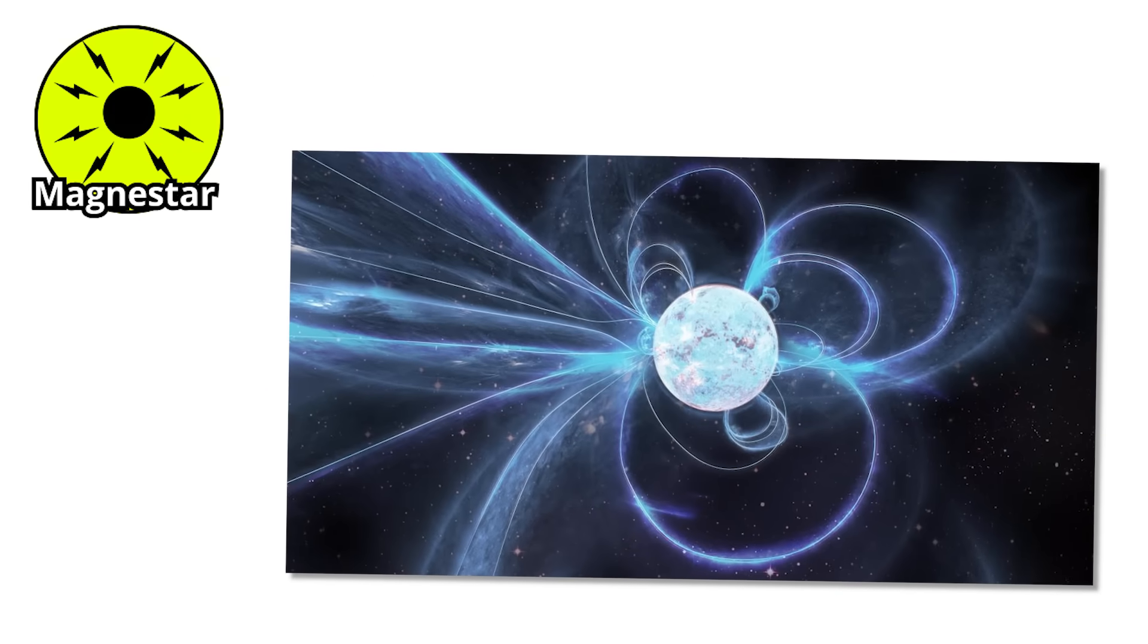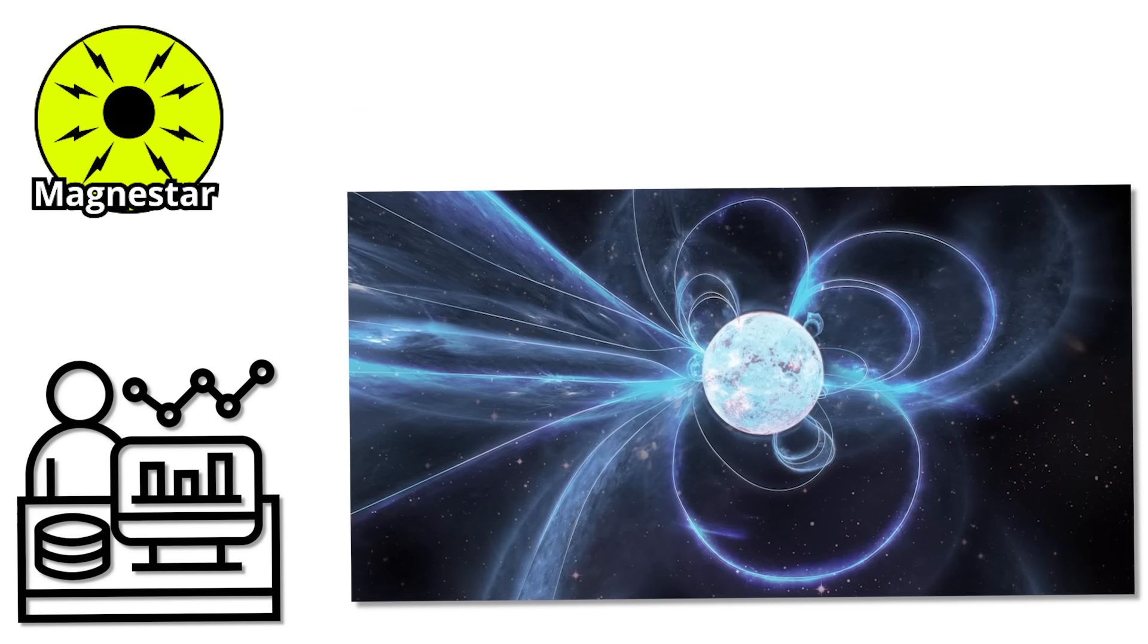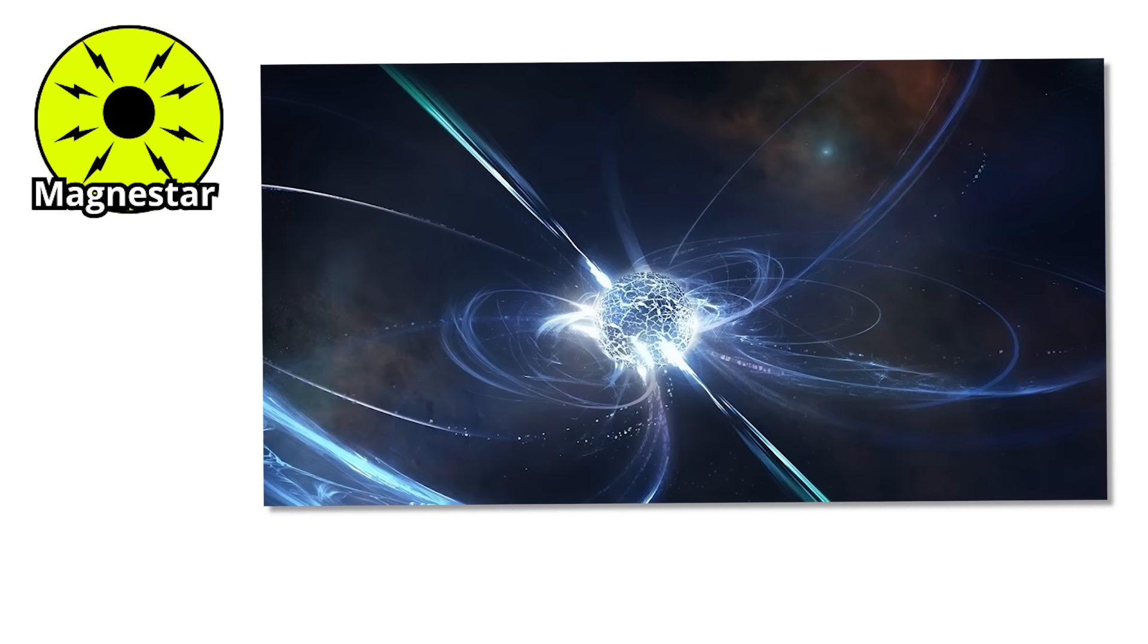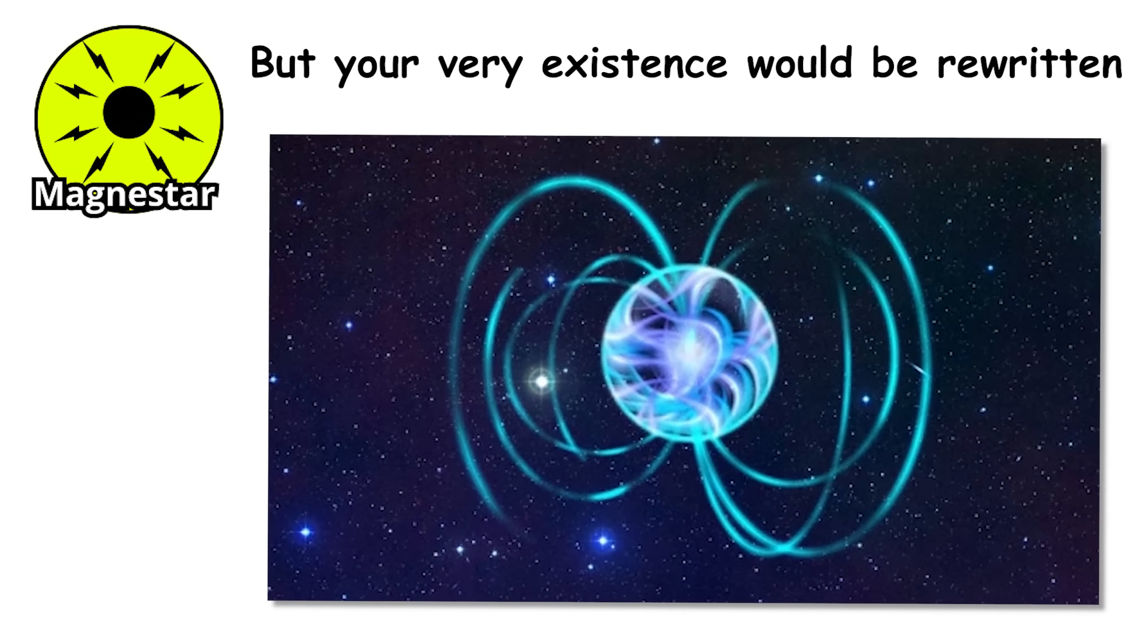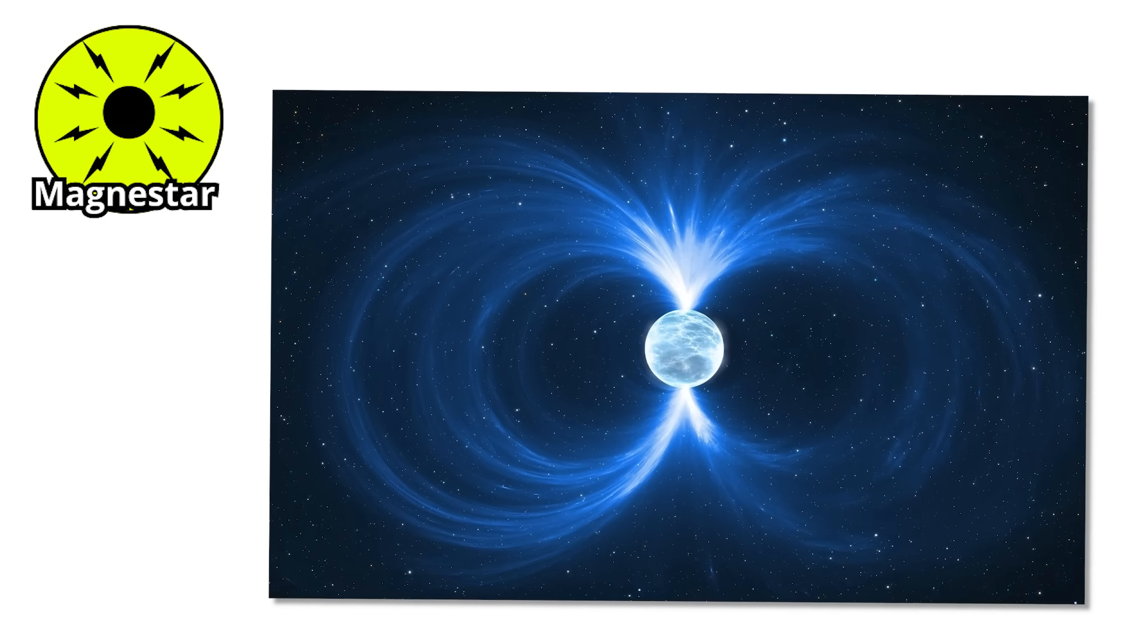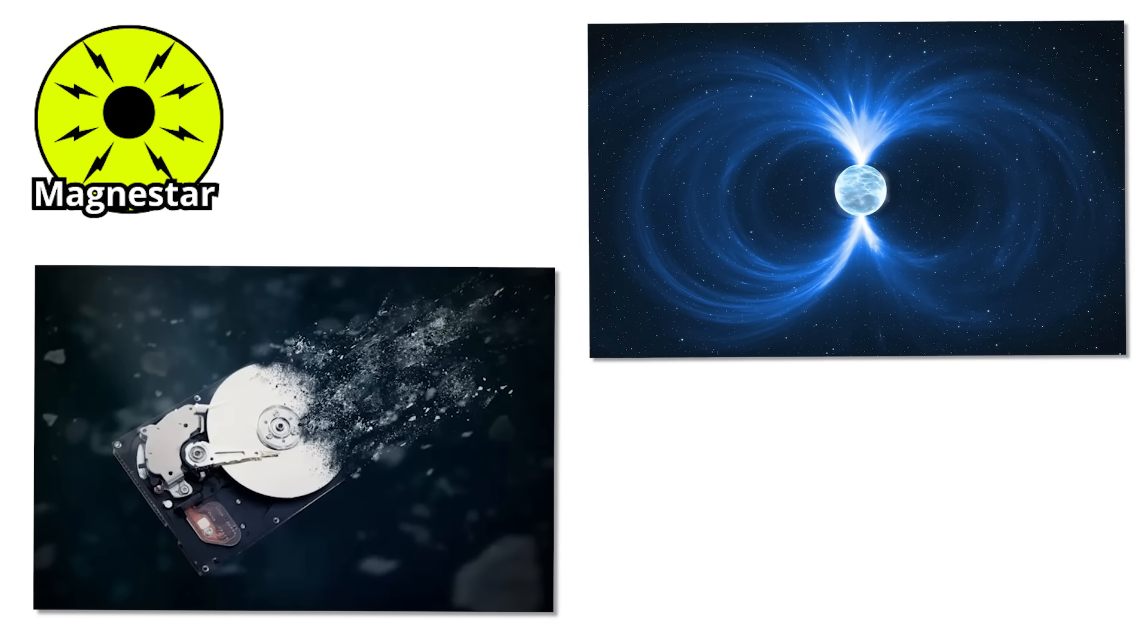Its magnetic strength is a thousand trillion times more powerful than Earth's. That number is so absurd it barely feels real. But scientists are very serious about how real the threat is. If you were somehow floating a thousand kilometers from a magnetar, your entire body would not only be torn apart at the atomic level, but your very existence would be rewritten. The magnetic field could scramble your molecular structure like a hard drive getting wiped by a giant cosmic eraser.